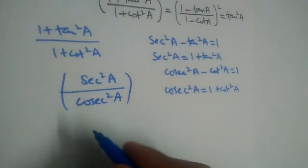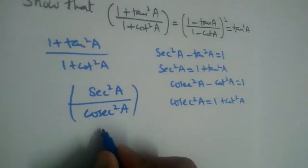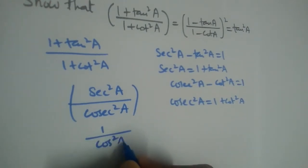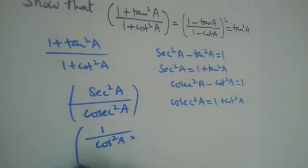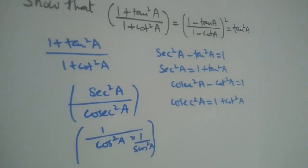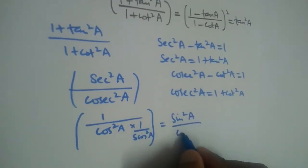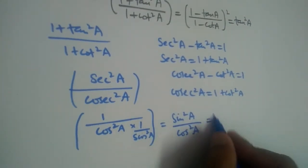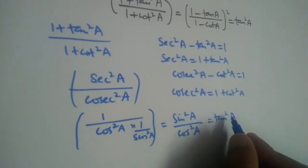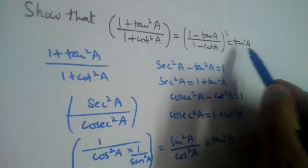Now we have sec²a / cosec²a. We can write sec²a as 1/cos²a and cosec²a as 1/sin²a. The cosec²a goes to the numerator, giving us sin²a / cos²a. Since sin/cos = tan, and we have a square, this equals tan²a. So (1 + tan²a) / (1 + cot²a) = tan²a.